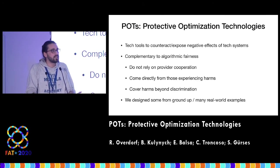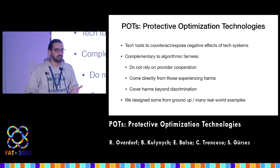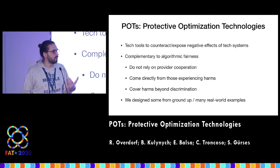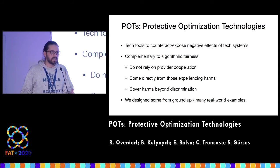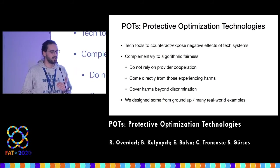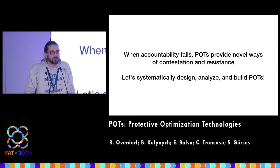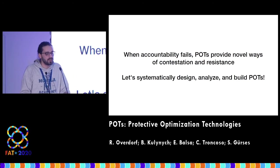To sum up, POTs — Protective Optimization Technologies — are technological tools that counteract or expose negative effects of technological optimization systems. They are an alternative approach to algorithmic fairness because they do not rely on provider cooperation; the system provider could even be adversarial. They come directly from those experiencing the harms of the system, and they could cover harms that go beyond discrimination. This approach of counteracting from the outside might seem radical, or like we're advocating for gaming the system, but when all means of accountability and communication fail, POTs could provide novel ways of contestation and resistance — and could even be the only ways of contestation and resistance.